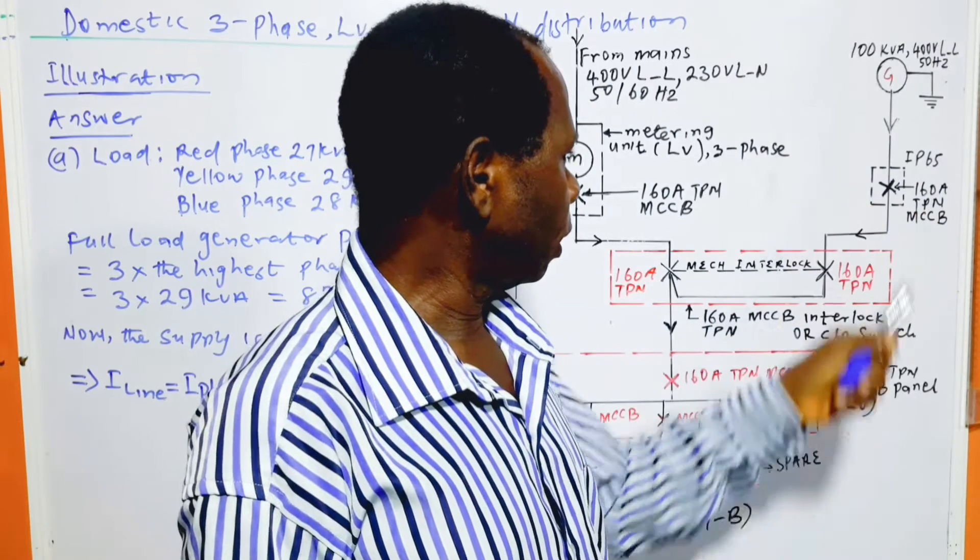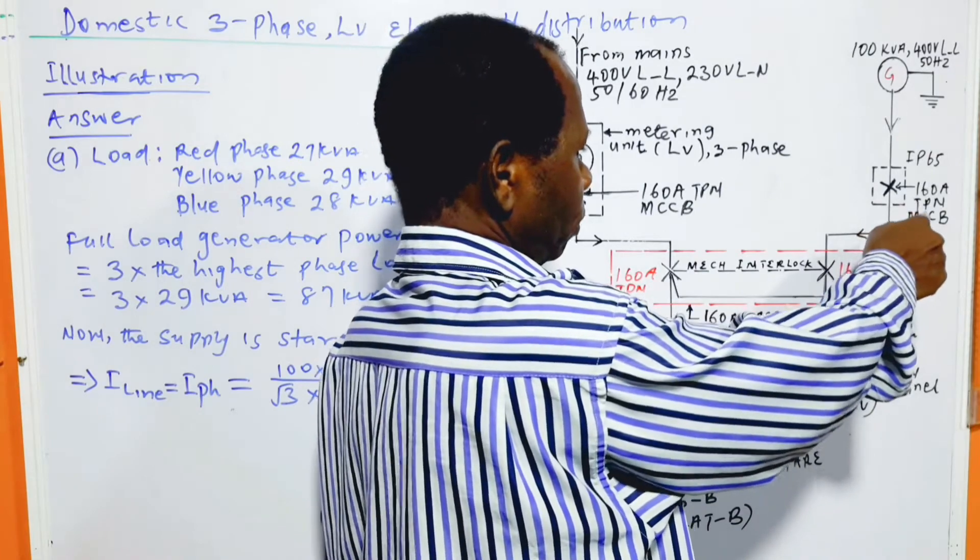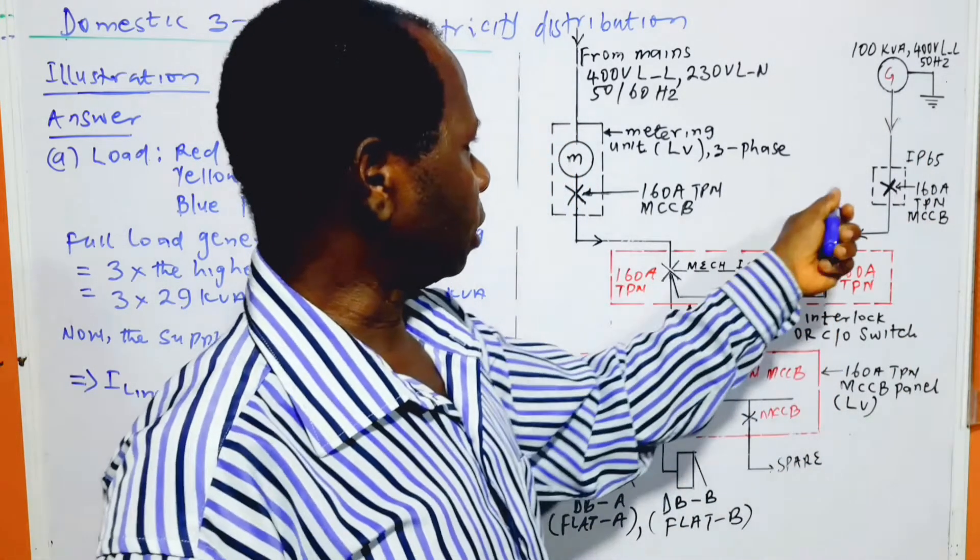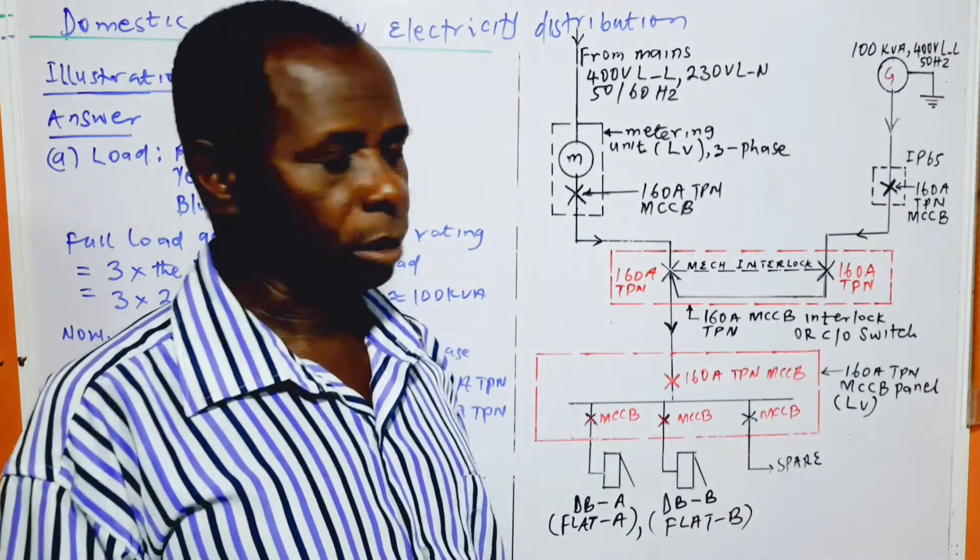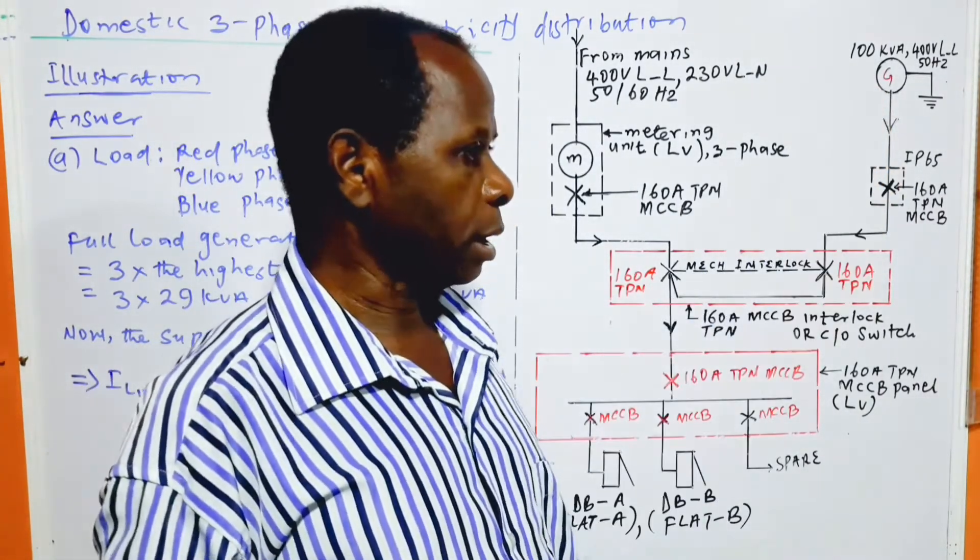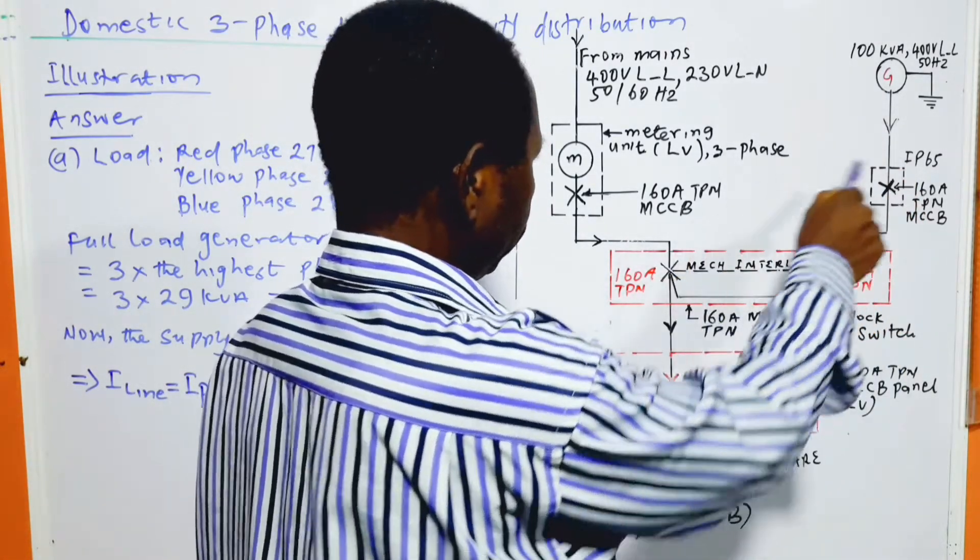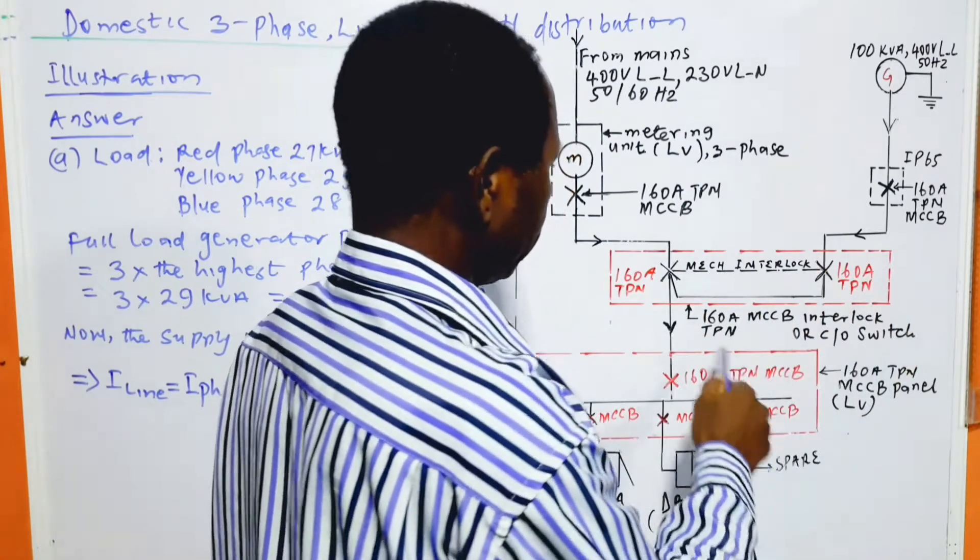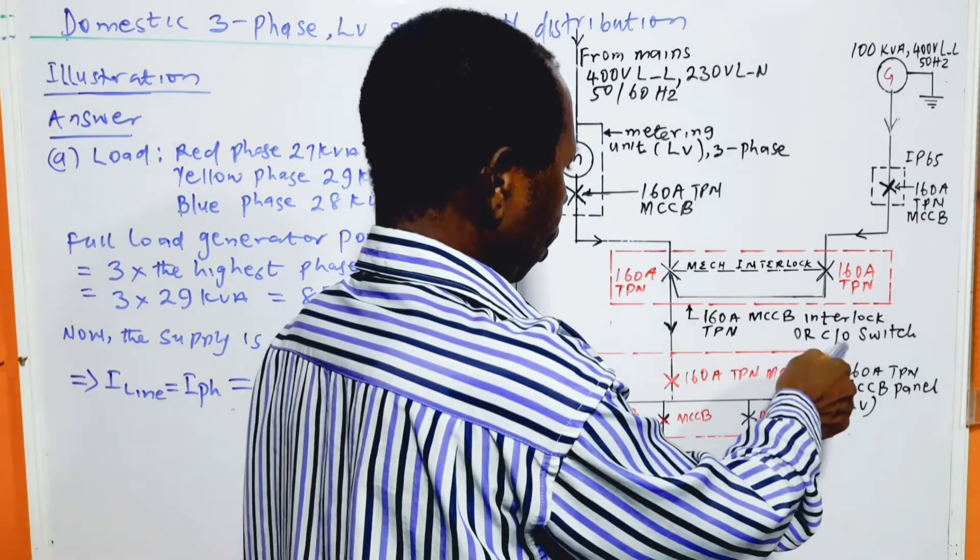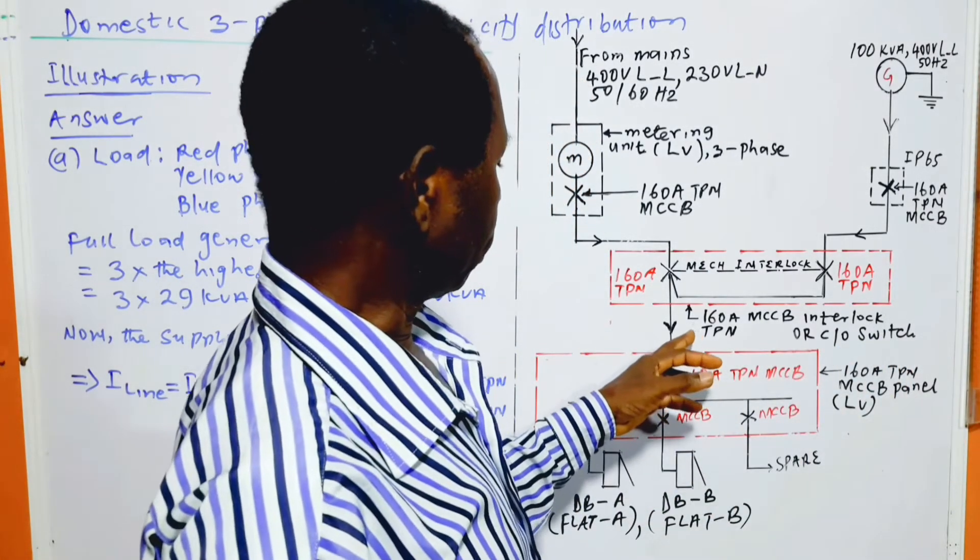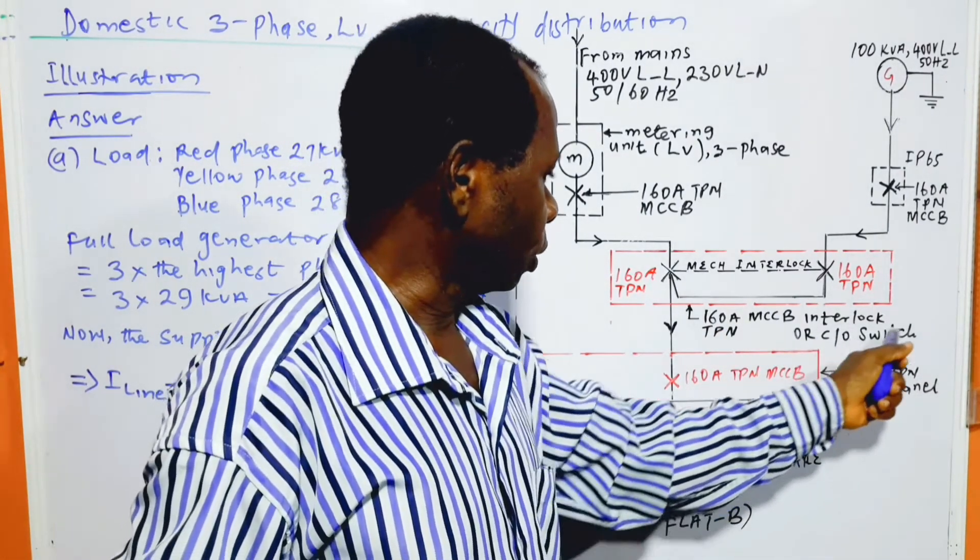From here we have ingress protection IP65 cubicle type MCCB to further protect the generator. We know that the generator itself has an inbuilt circuit breaker. This one is just to complement the inbuilt circuit breaker. Then from here we come to this red box, which is 160 amp MCCB interlock or changeover switch, 160 amp MCCB triple phase with neutral interlock or changeover switch.